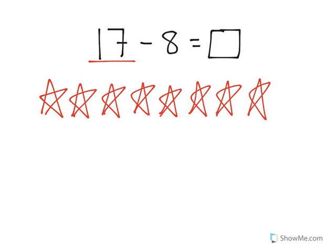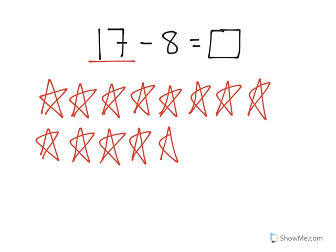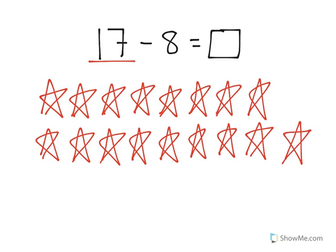7, 8, 9, 10, 11, 12, 13, 14, 15, 16, and 17. And what subtraction means is that we are going to take away 8 from this group.